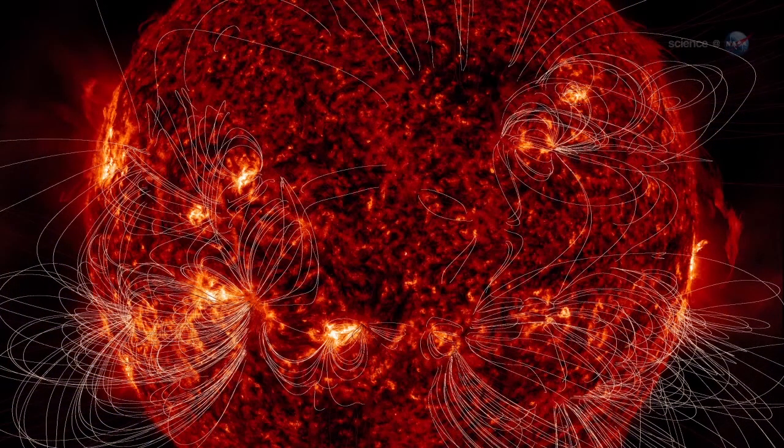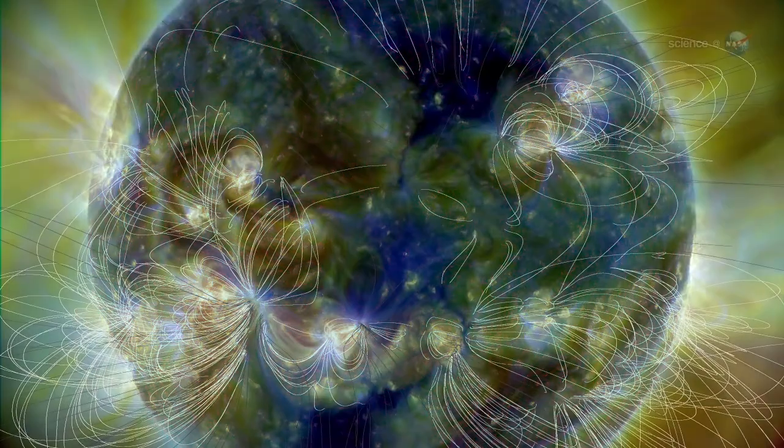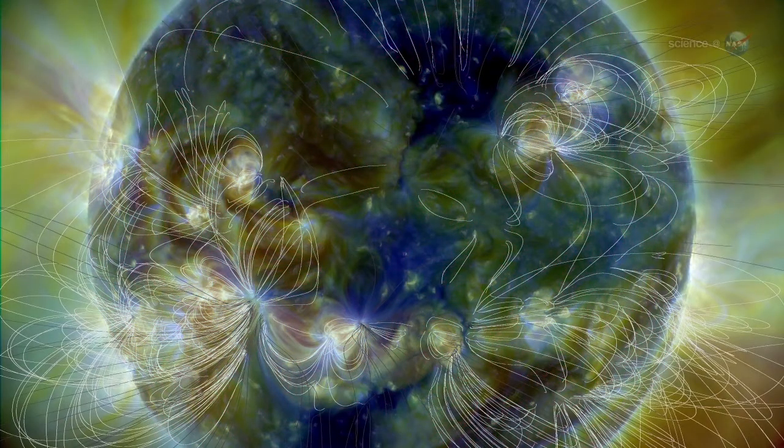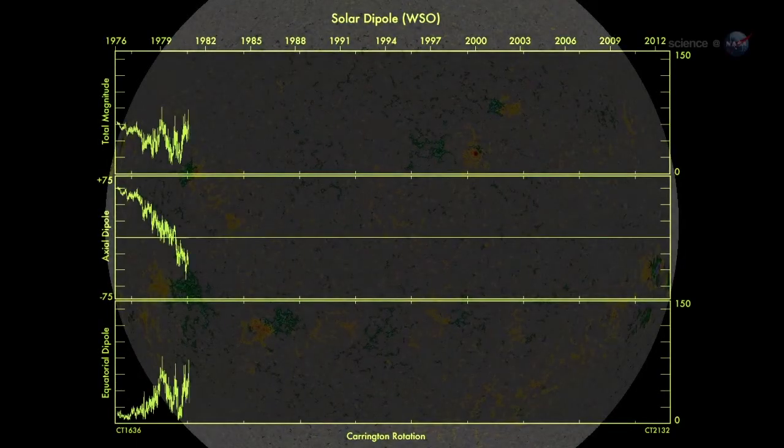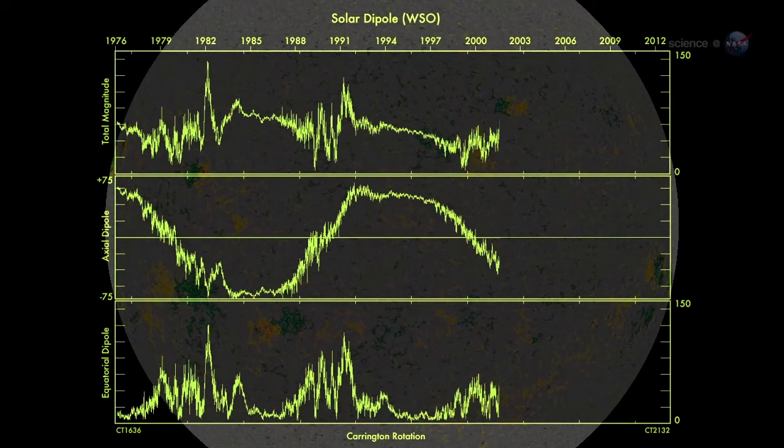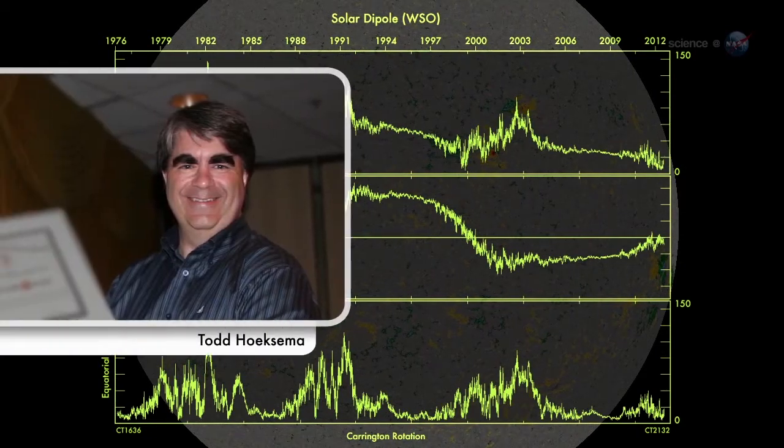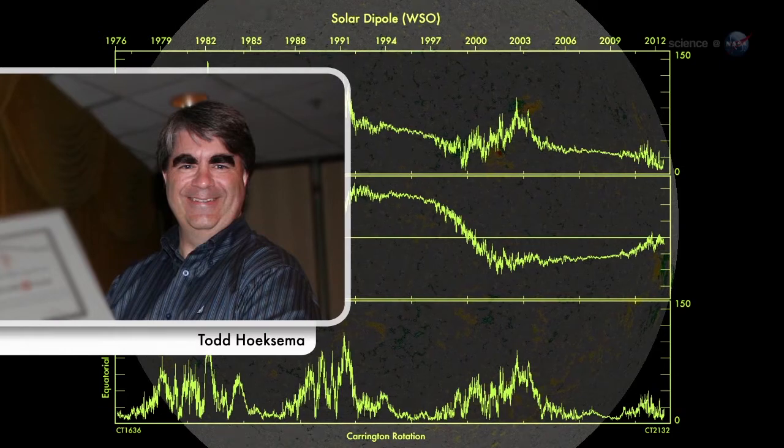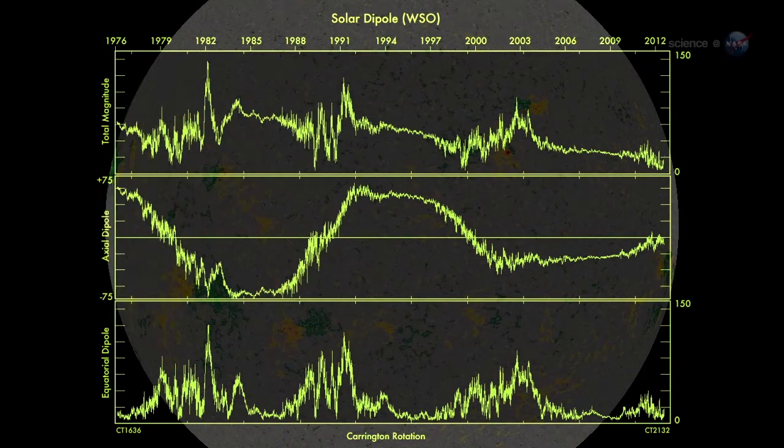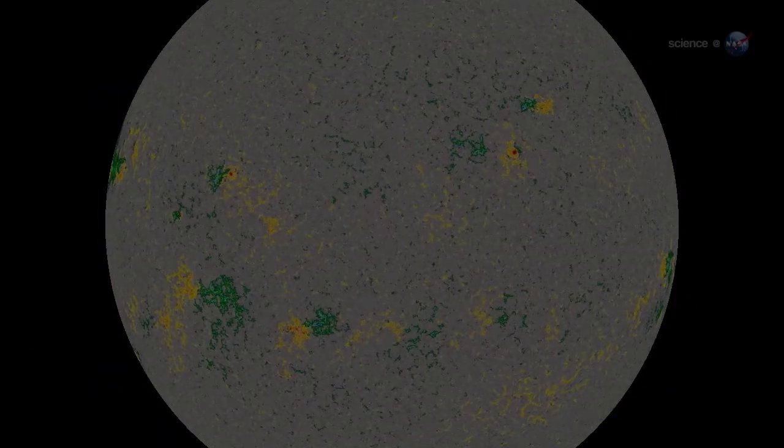According to measurements from NASA-supported observatories, the Sun's vast magnetic field is about to flip. It looks like we're no more than three to four months away from a complete field reversal, says solar physicist Todd Huxama of Stanford University. This change will have ripple effects throughout the solar system.